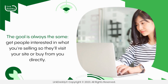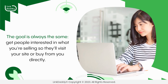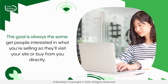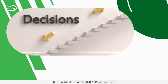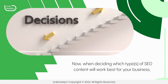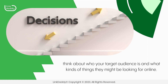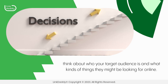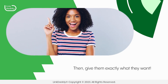The goal is always the same: get people interested in what you're selling so they'll visit your site or buy from you directly. Now, when deciding which type of SEO content will work best for your business, think about who your target audience is and what kinds of things they might be looking for online. Then, give them exactly what they want.